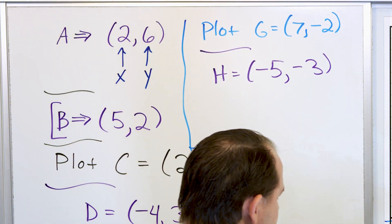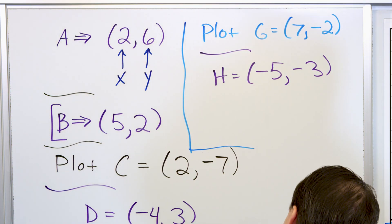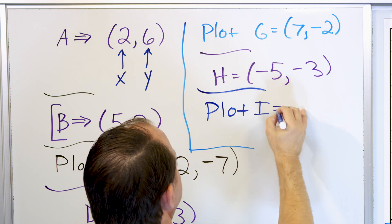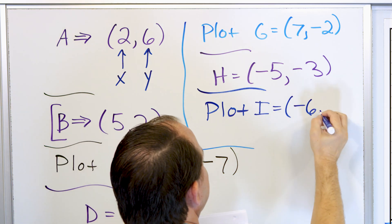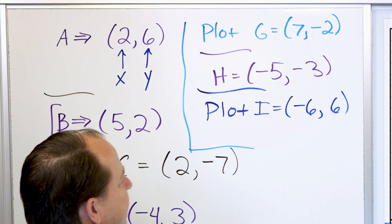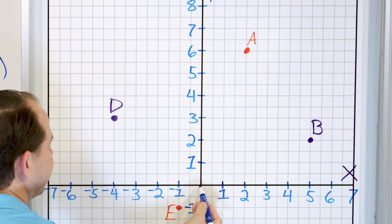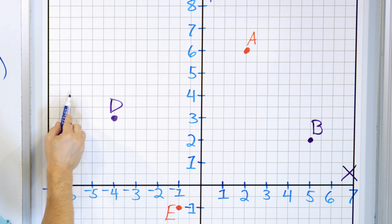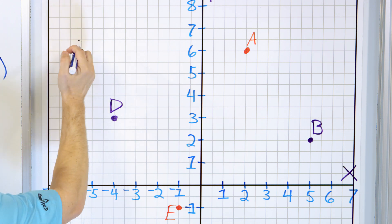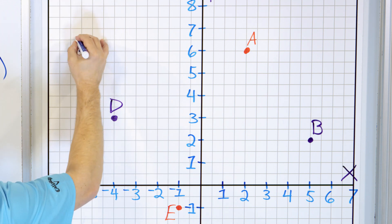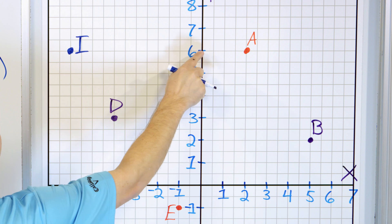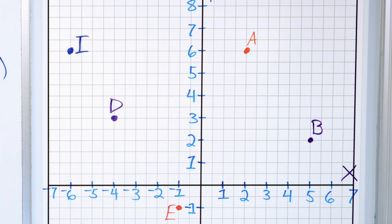Two more. Let's plot point I at negative six comma positive six. Negative six for x: negative one, two, three, four, five, six. Positive six for y: one, two, three, four, five, six — stop right here. So point I is at the intersection: negative six for x going left, and positive six for y going up.